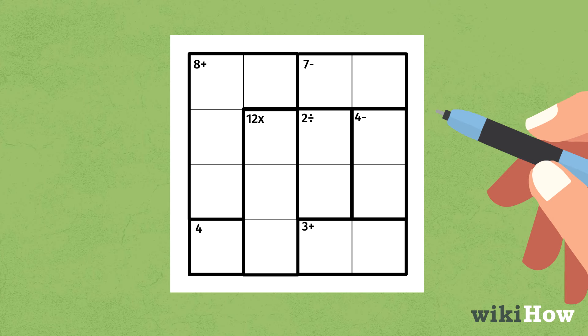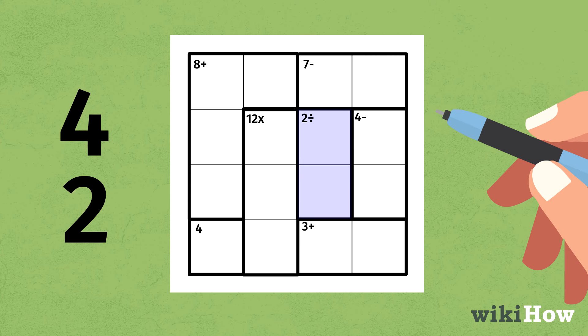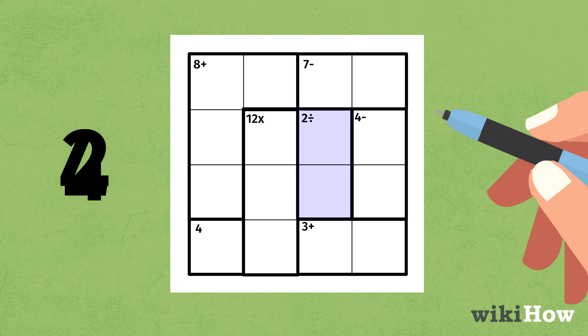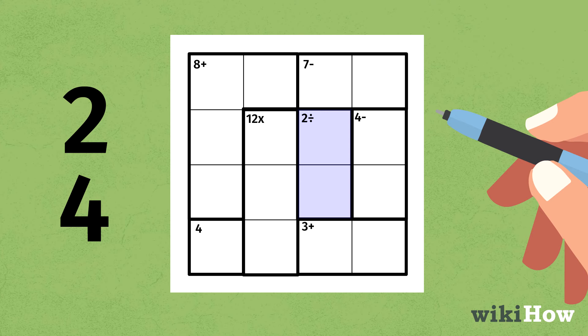Subtraction and division notes can be in any order. For example, if the cage has a 2 divided by, you can answer it with either 4, 2, or 2, 4, so long as the equation is correct.